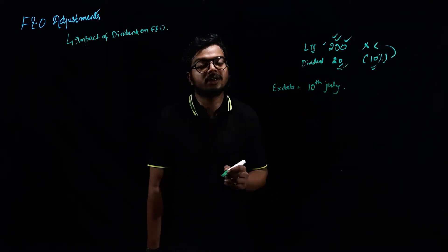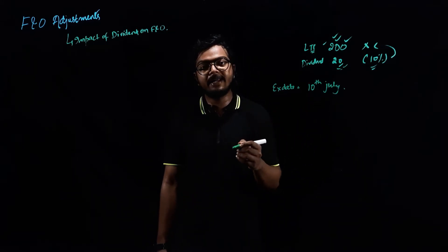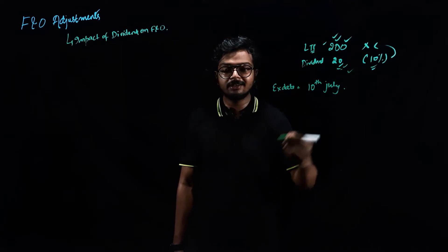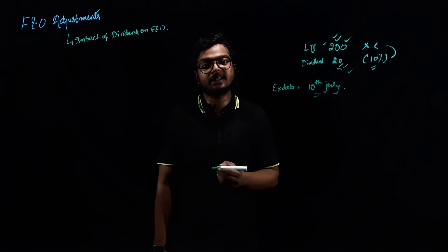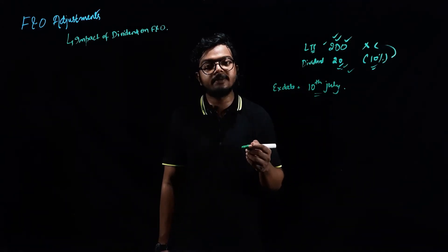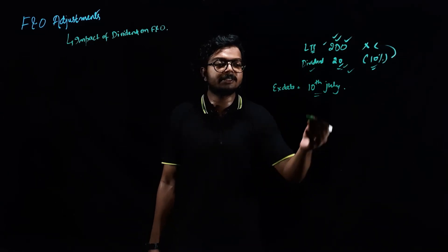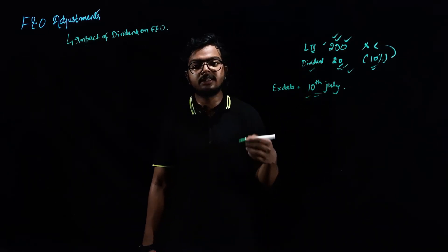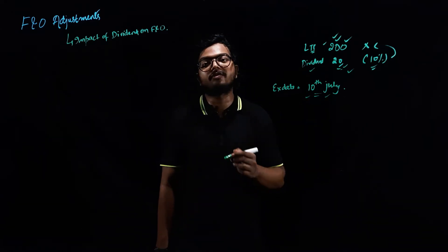So what does that mean? Before this date, say on 9th of July, many people would be buying the shares just to get this dividend of 20 rupees. Now they would be selling on 10th of July because once they buy on 9th of July, they are eligible for this dividend. So there is no purpose of holding it on 10th. The normal traders would be selling it off.